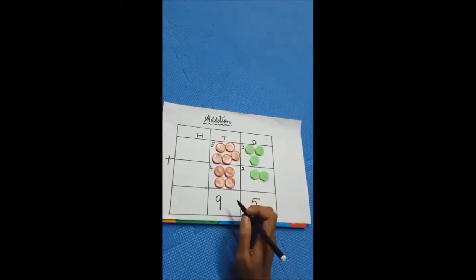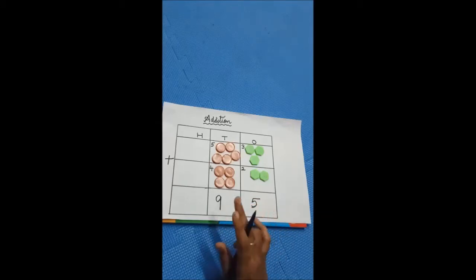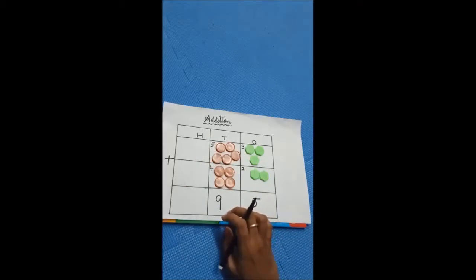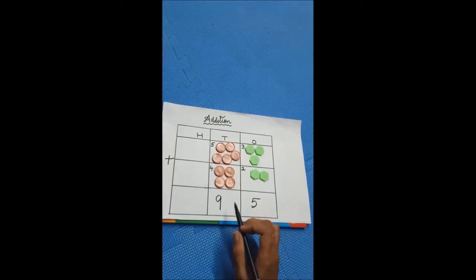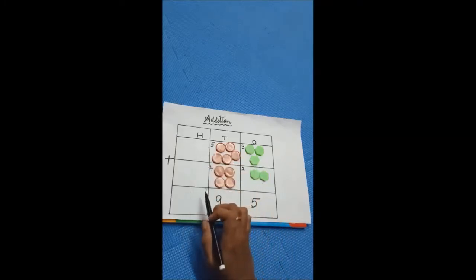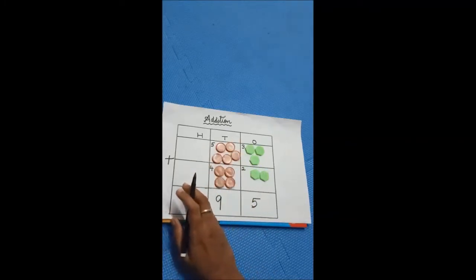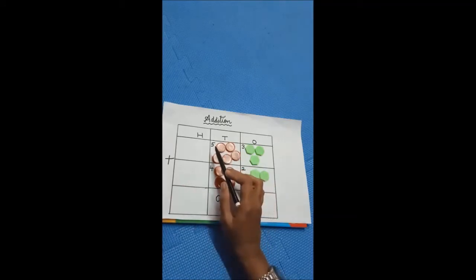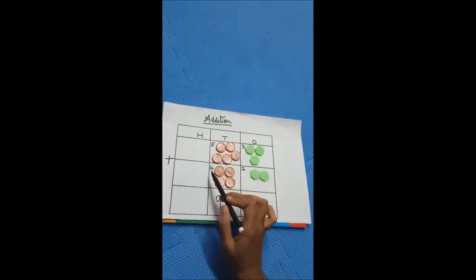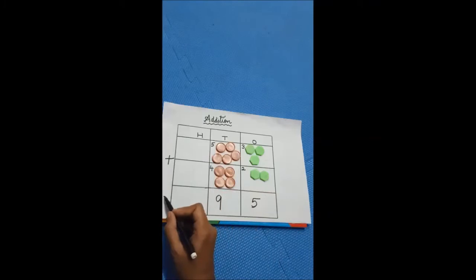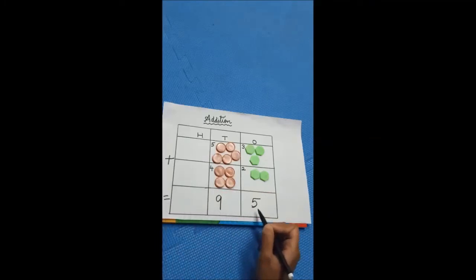Here also we don't have any carry over. If it is two digits, we will carry over the tens number to the next place value. Here we got only single digits, so we have written the number as it is. In hundreds place there is no number — it is empty, so no need to go to hundreds place. So the answer is: 53 plus 42 is equal to 95. Have you understood, children?